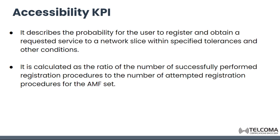Accessibility KPI describes the probability for the user to register and obtain a requested service to a network slice within specified tolerances and other conditions. It is calculated as the ratio of number of successfully performed registration procedures to the number of attempted registration procedures for the AMF set. AMF stands for Accessing Mobility Management Function set.